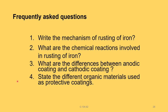Frequently asked exam questions from this video lesson: write the mechanism of rusting of iron; what are the chemical reactions involved in rusting of iron; what are the differences between anodic coating and cathodic coating; state the different organic materials used as protective coatings; write the characteristics of a good paint. Thank you.